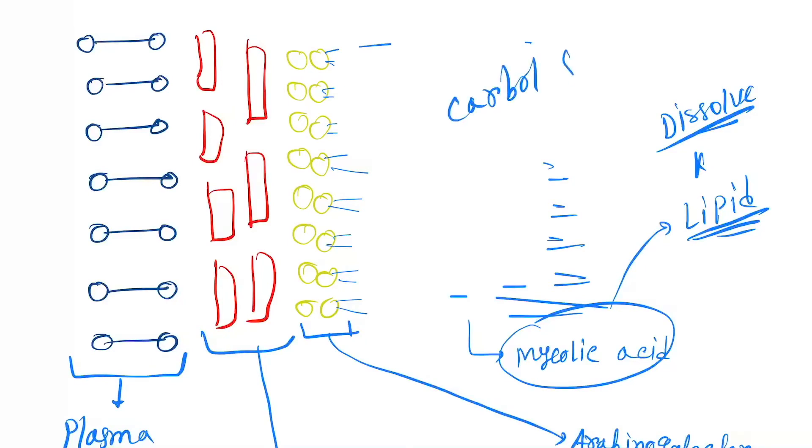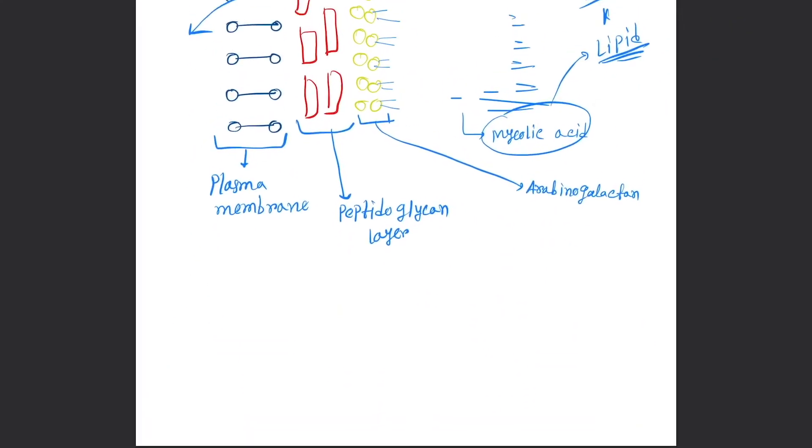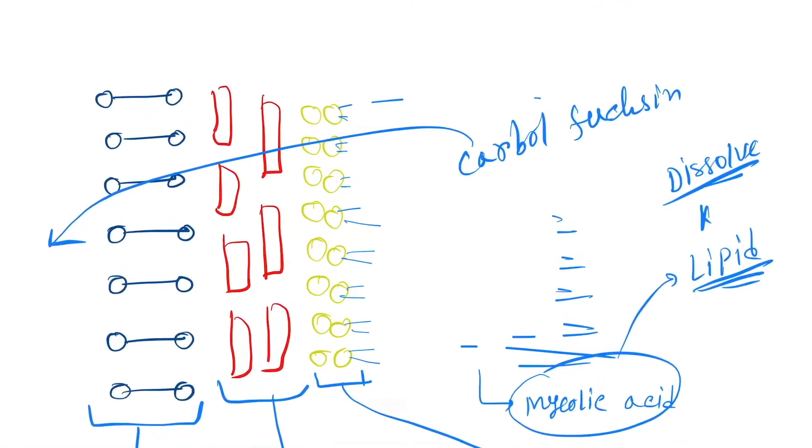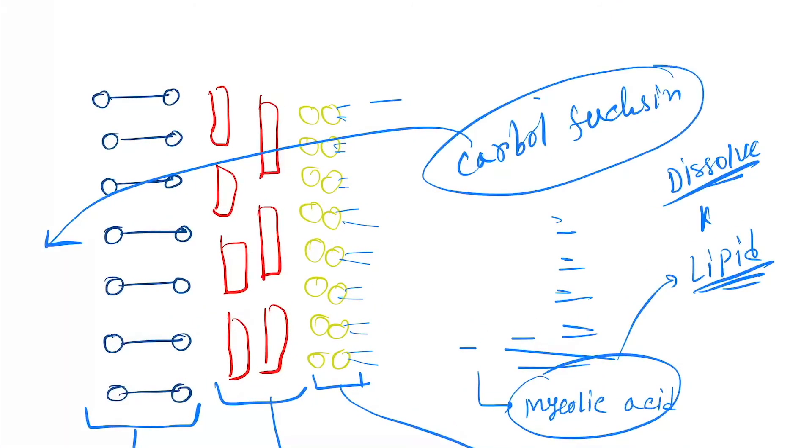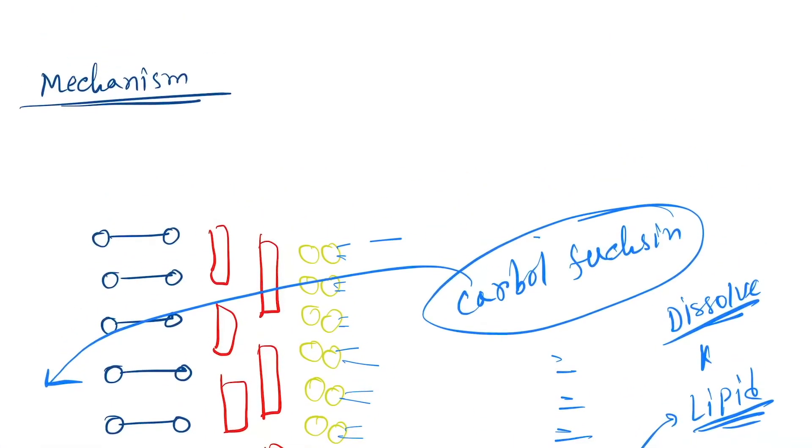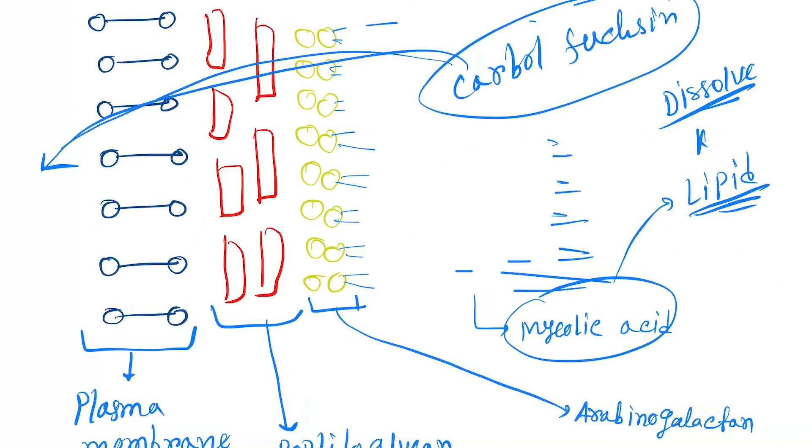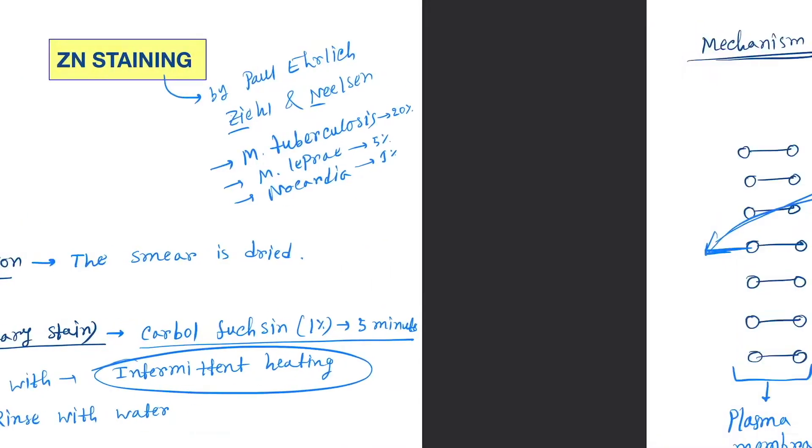In other bacteria, it is not easy for carbol fuchsin to go inside the cytoplasm - it gets washed away. But in acid-fast bacteria, it goes into the cytoplasm. Now the stain is retained. After the acid decolorizer, the stain is preserved and you will see the acid-fast organism. So this is the mechanism of Ziehl-Neelsen staining.